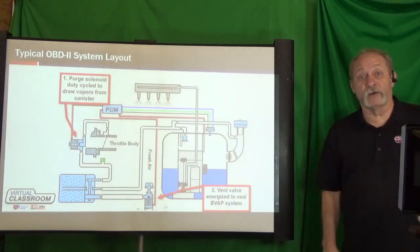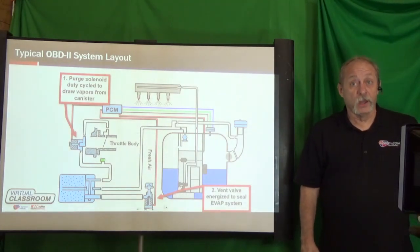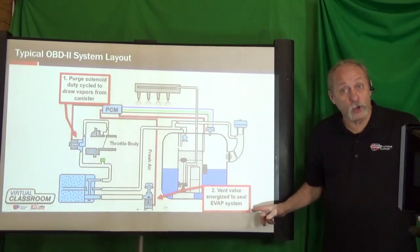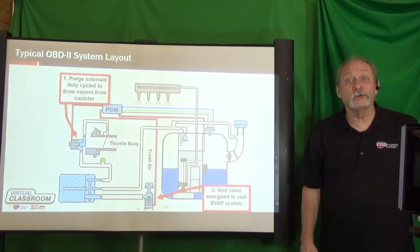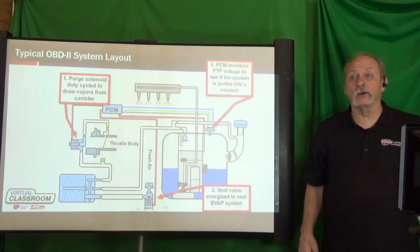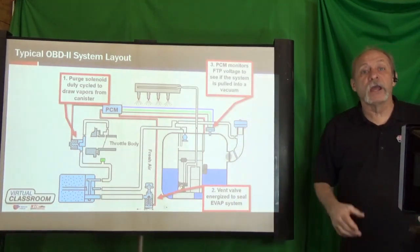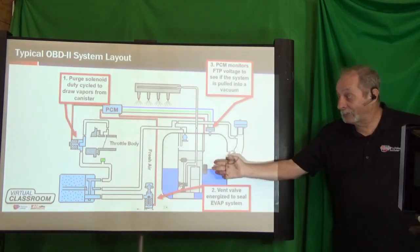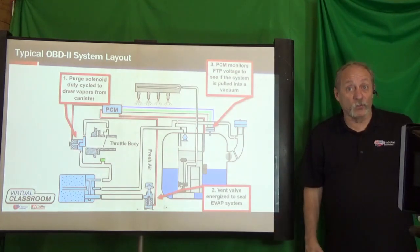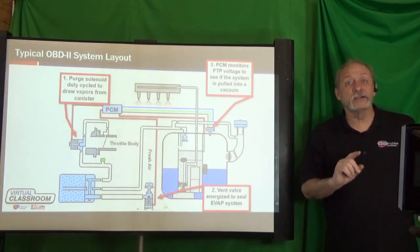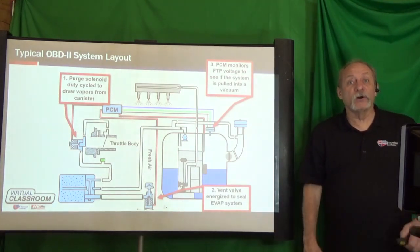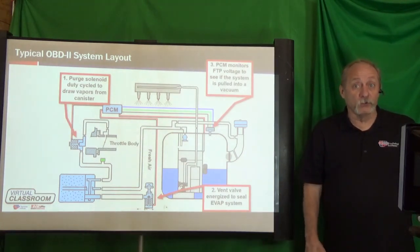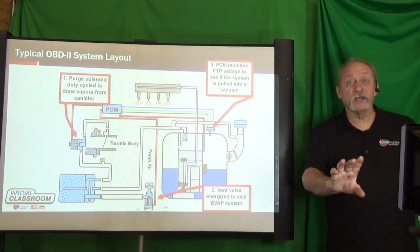The next thing the computer does is close the canister vent valve, sealing the system. With the purge valve on and the vent valve sealed, we should pull the tank and canister into a vacuum. The computer watches the fuel tank pressure sensor — if it sees about 8 to 10 inches of water vacuum, the large leak test passes. If we fail to achieve that much vacuum, the large leak test fails: P0440.